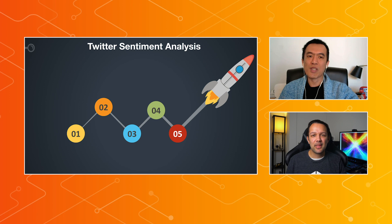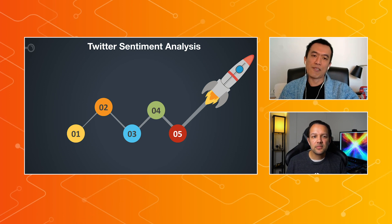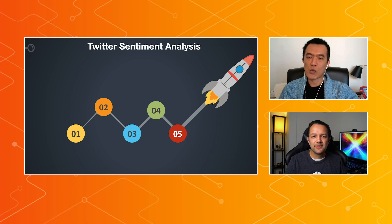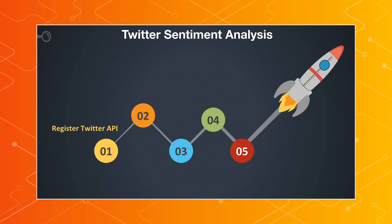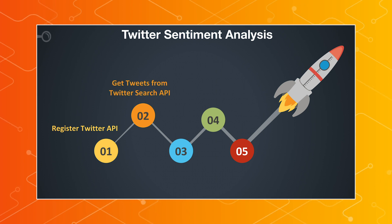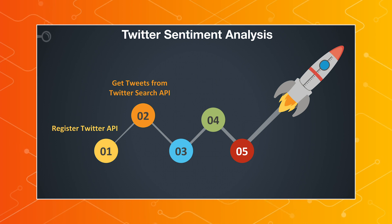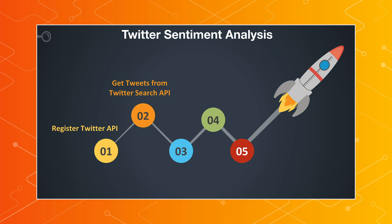Sure. I implemented this demo in five simple steps. First, you need to register a Twitter API — go to the Twitter developer platform, register, create a Twitter app, and generate the API key and access key. The second step is to get tweets from the Twitter search API. You connect to the Twitter search API, post the hashtag in your query, and pull down the latest tweets with your hashtag. Those tweets are pulled from the last 10 minutes.